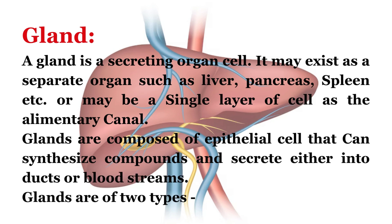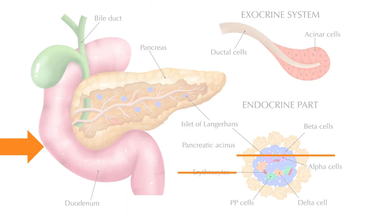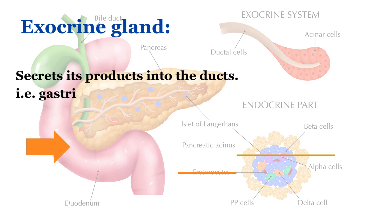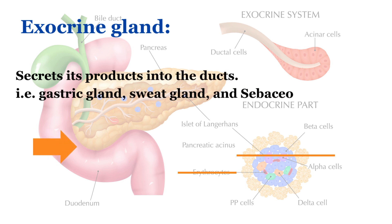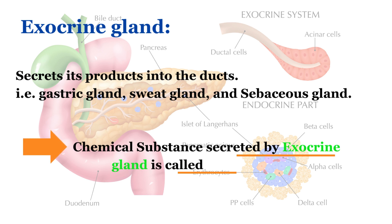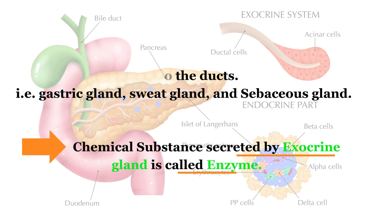Glands are of two types. First, exocrine glands, which secrete their products into ducts — like gastric glands, sweat glands, and sebaceous glands. The chemical substances secreted by exocrine glands are called enzymes.